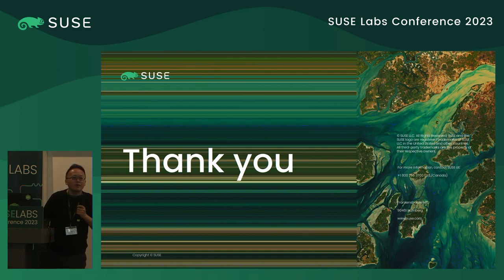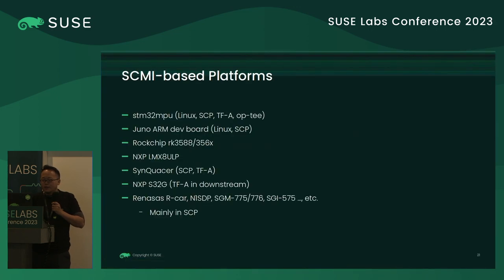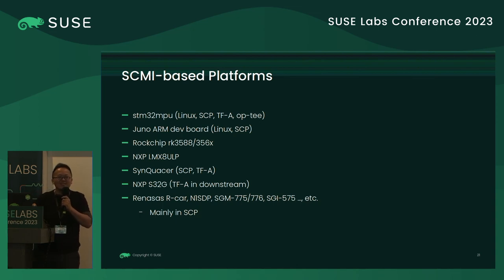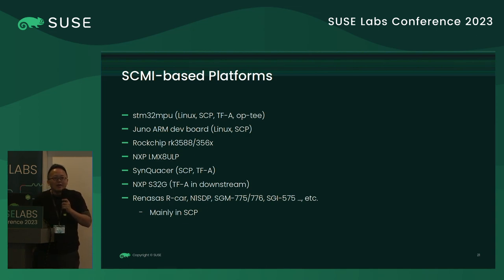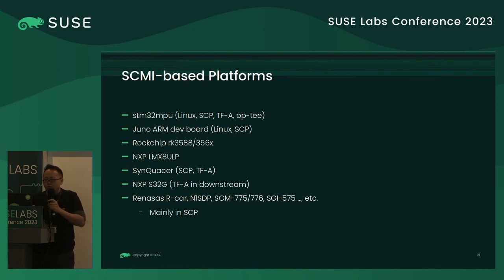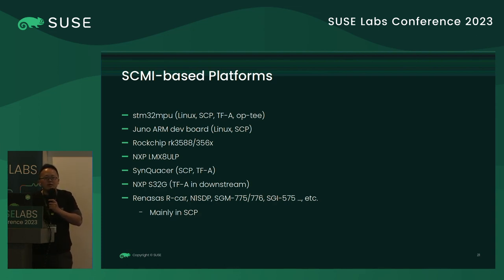Q: Can you go to the slide showing different platforms using SCMI? A: Those are just the upstream implementations I could find. I'm more familiar with S32G. I believe there are more platform implementations. For Rockchip, it doesn't mention SCP — so it's probably running the SCMI server in secure mode. I checked and haven't seen any SCP-related node in their device tree, so those resources are probably controlled directly. For some cases like Qualcomm chips, you'll see SCP nodes in the device tree.